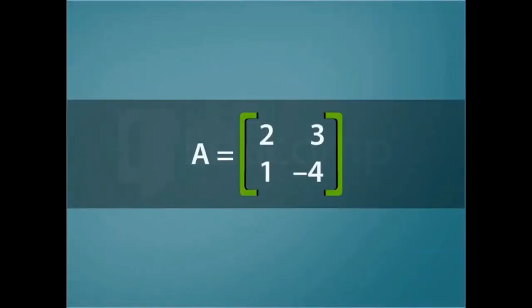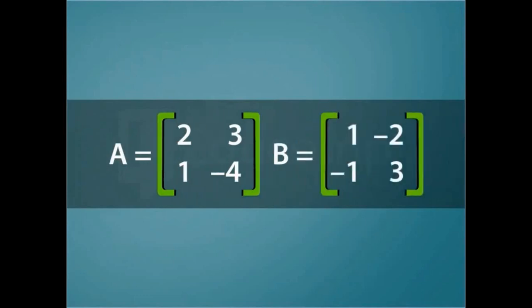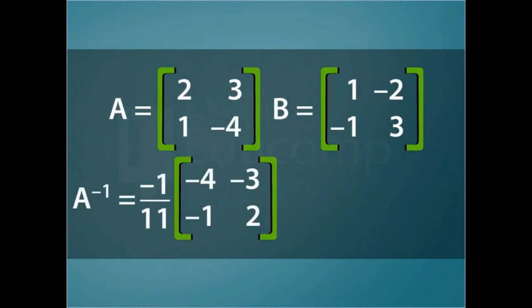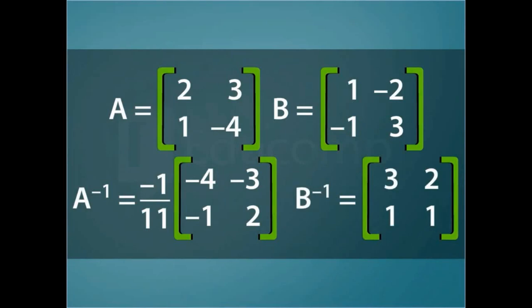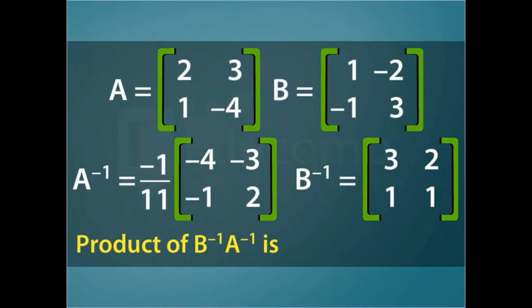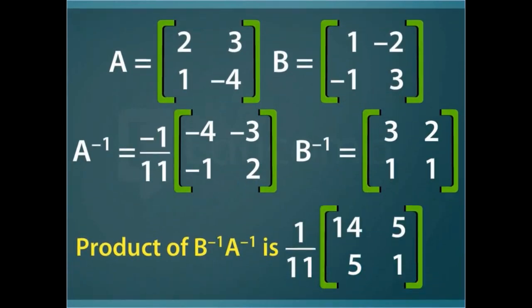Let A be the matrix with elements 2, 3, 1, and minus 4, and B be the matrix with elements 1, minus 2, minus 1, and 3. The inverse A inverse is given by the scalar 1 by 11 multiplied by the matrix with elements minus 4, minus 3, minus 1, and 2. B inverse is the matrix with elements 3, 2, 1, and 1. The product of B inverse and A inverse is given by the scalar 1 by 11 times the matrix with elements 14, 5, 5, and 1. This is statement 1.